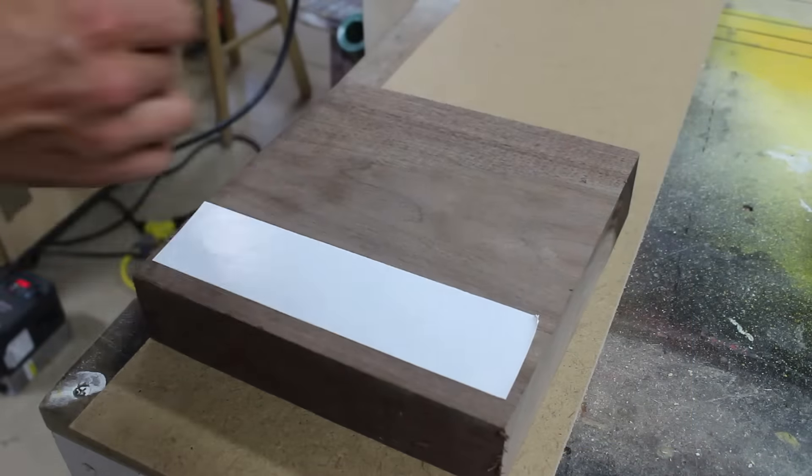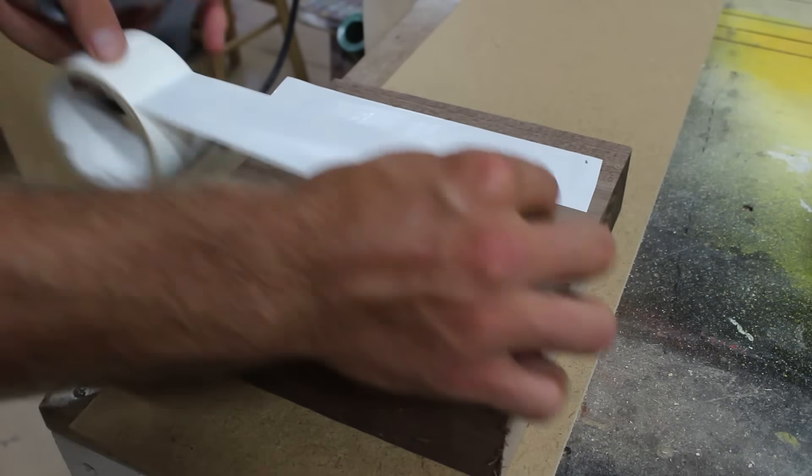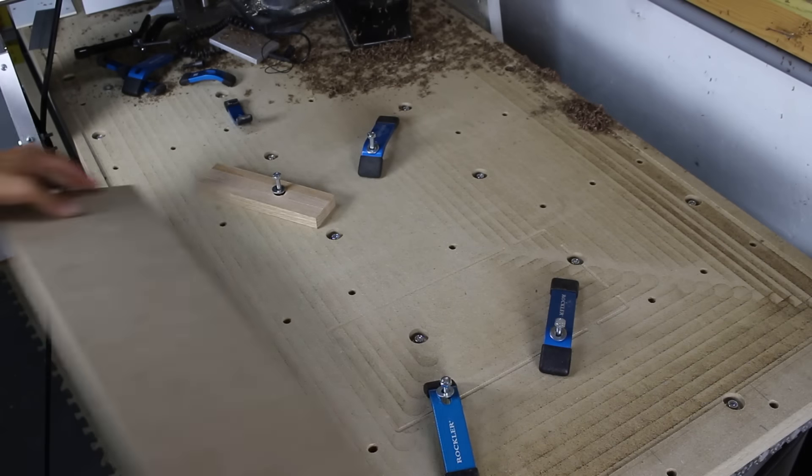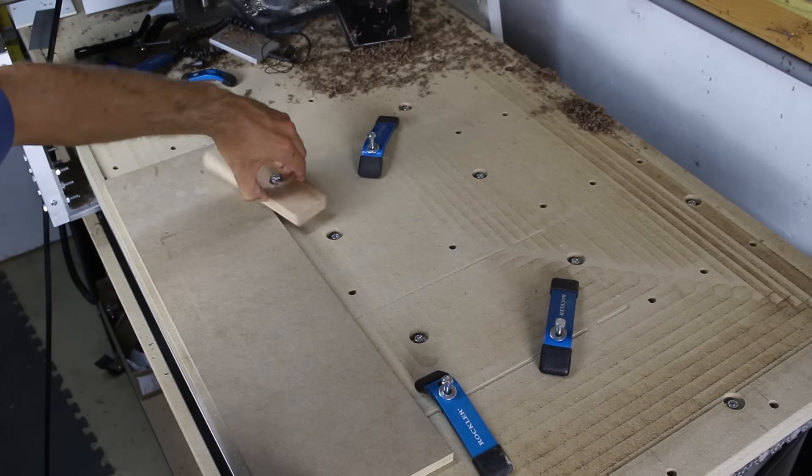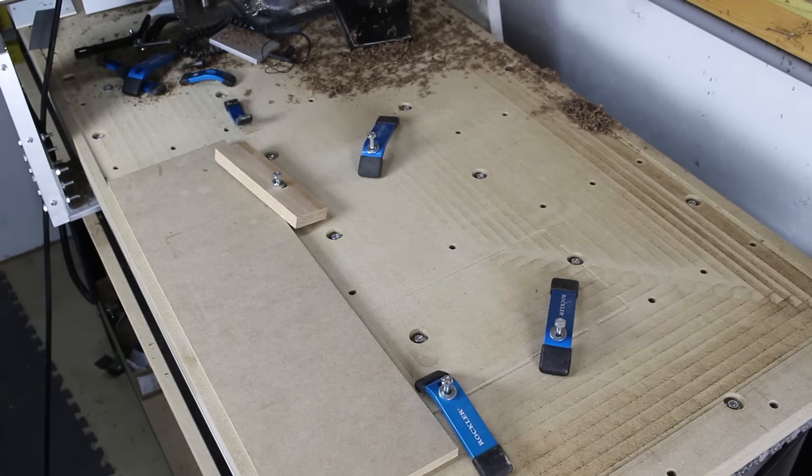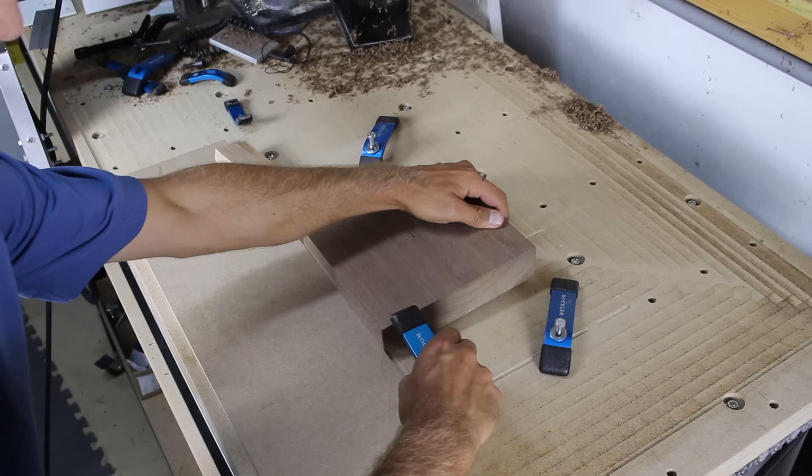I used a combination of double-sided tape and clamps to hold down the walnut blank. I used a piece of MDF to set the blank parallel with the x-axis, then applied clamping pressure with the four hold downs.